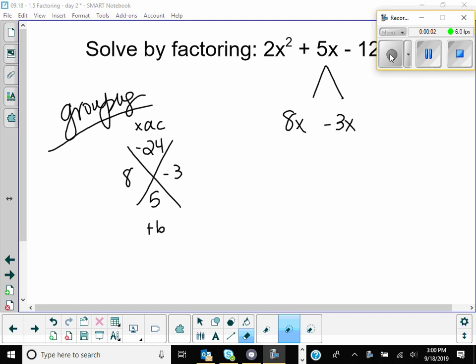So we're rewriting the middle term. I'm not really changing the value of anything, it's just instead of 5x, I have 8x minus 3x. We're all agreed that's the same as 5x, right?